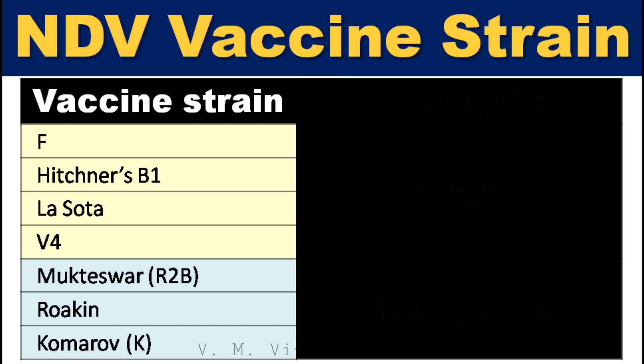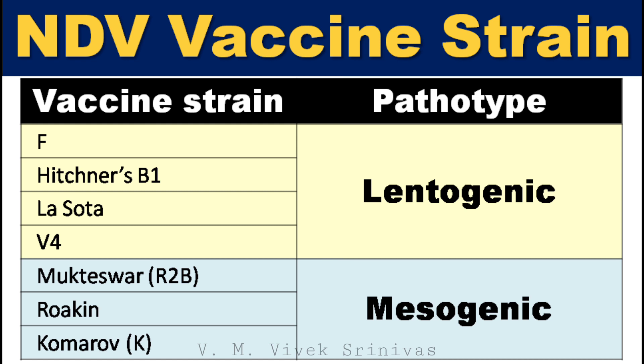These are the Newcastle disease vaccine strains: F strain, Hitchner's B1, Lesotho, V4 strain, R2B or Mukteswar strain, Rokin, and Komarov or K strain. Strains F, B1, and Lesotho are lentogenic. Strains R2B, Rokin, and K are mesogenic.